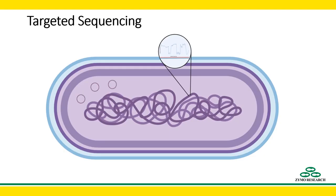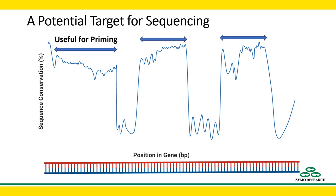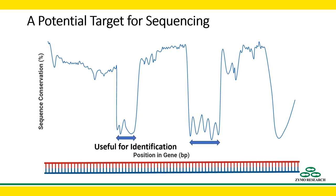In targeted sequencing, we are taking one specific gene that should be present in all species relevant to the question. This could be a gene found across an entire kingdom, such as all bacteria, or something common to just the members of a group of interest, such as Staphylococcus. The gene needs properties that make it favorable for this kind of use. We need regions of high conservation that we can use for priming, surrounding regions of low conservation or high variability that we can use to distinguish between different taxa.